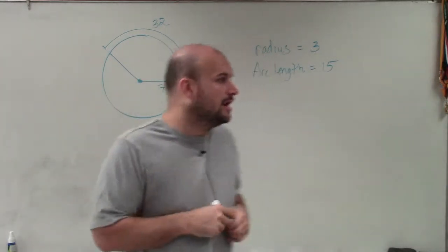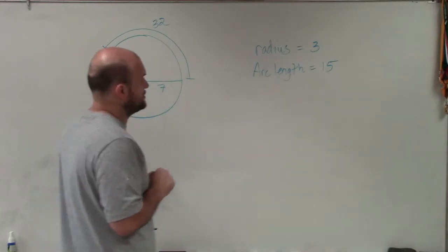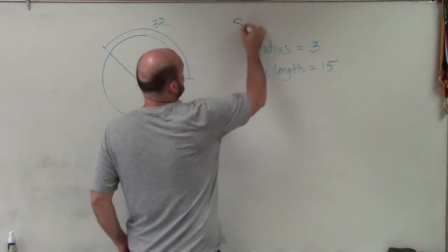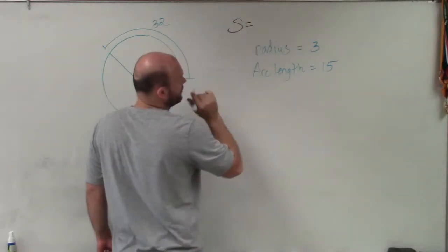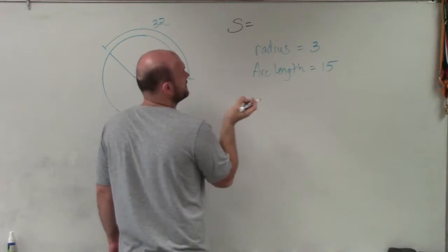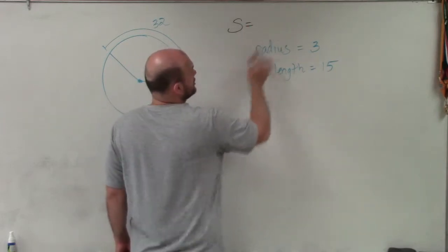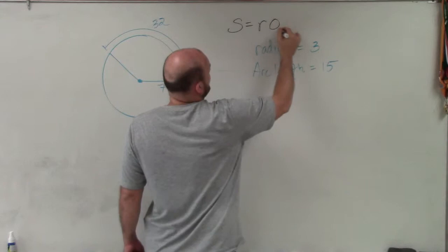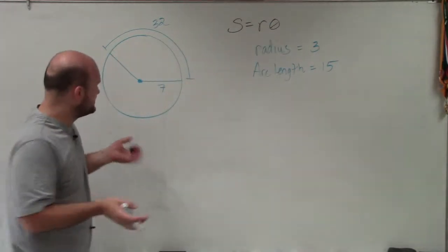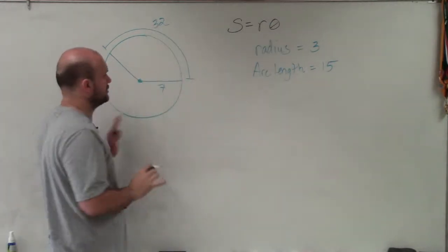This also goes through the basic definition of a radian, where the formula for determining a radian is s, which represents our arc length, is equal to our radius times theta. So in this case, you can see that we have our radius and we have our arc length.